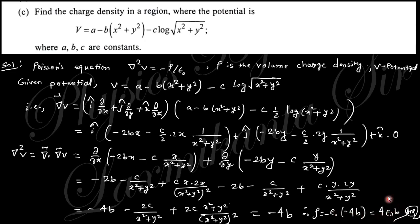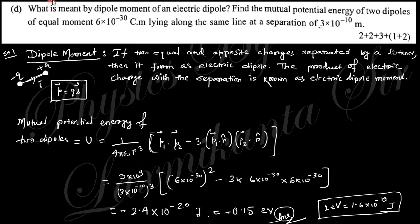Next question: what is meant by the dipole moment of an electric dipole? An electric dipole consists of two equal and opposite charges separated by a distance. The dipole moment is defined as the charge multiplied by the separation distance between the charges.